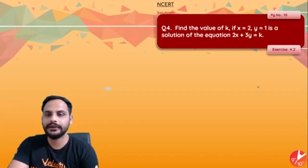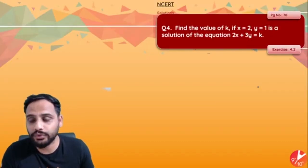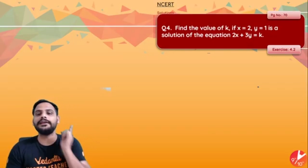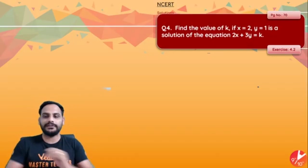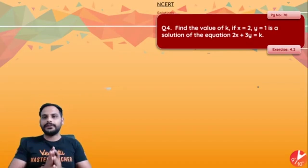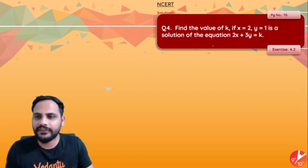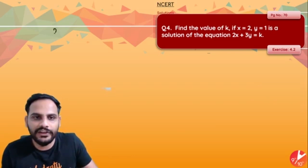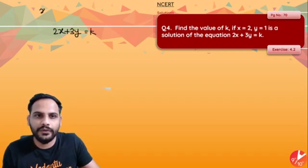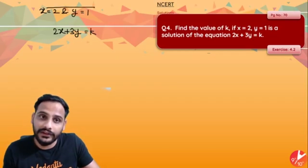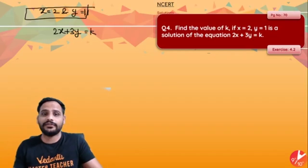Next part, find the value of k if x is equal to 2 and y is equal to 1 is a solution of this equation. In this question they have clearly told that for this equation 2x plus 3y equal to k, x is equal to 2 and y is equal to 1 is a solution. It is definitely a solution.